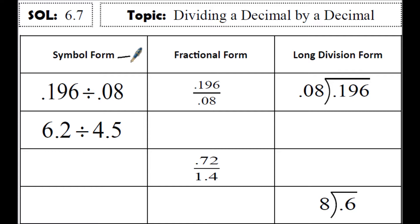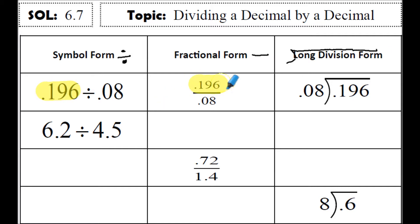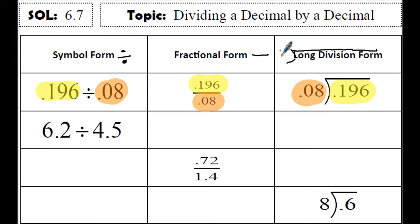The symbol form for division uses the division sign, and fractional form uses a fraction symbol, and long division uses this symbol. The first number is 0.196, or 196 thousandths. And the second number, or the denominator, or the number on the outside, will all be the same — 8 thousandths.